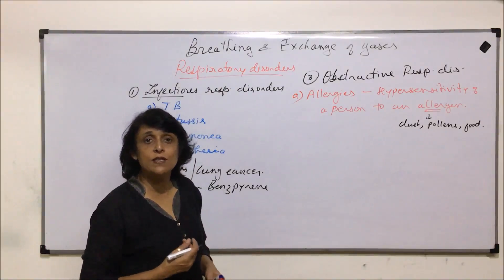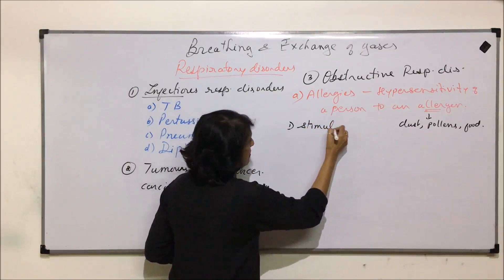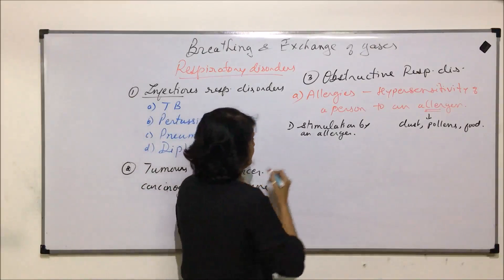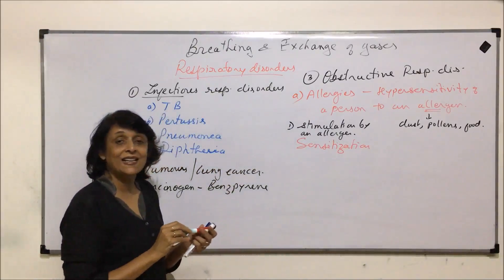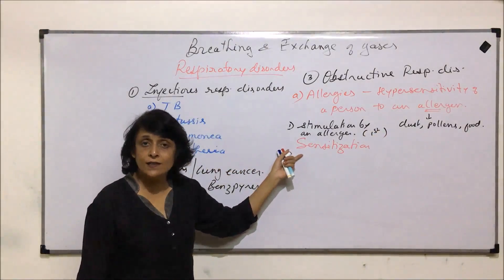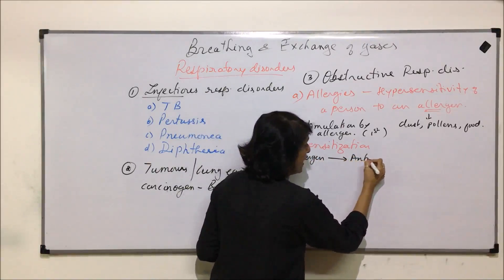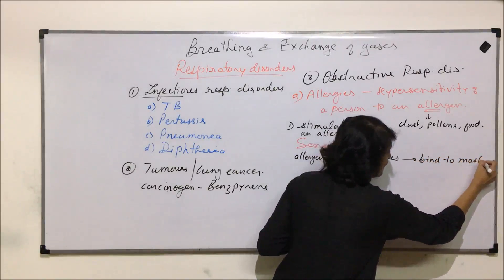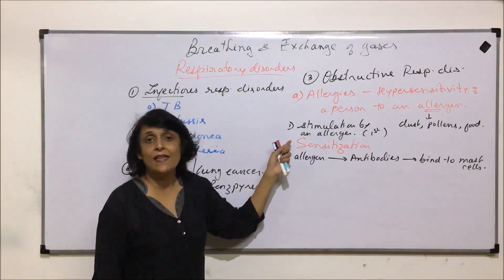The symptoms of allergies manifest in three steps. The first step is stimulation by an allergen, known as sensitization. This is the first time the allergen enters the body. The allergen triggers the formation of antibodies, and these antibodies bind to mast cells present in the connective tissue. Reactions during this step are normally milder.